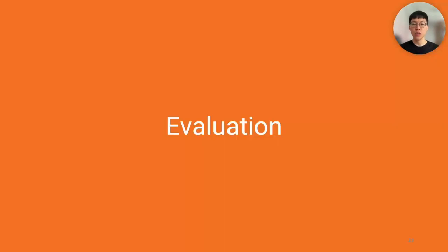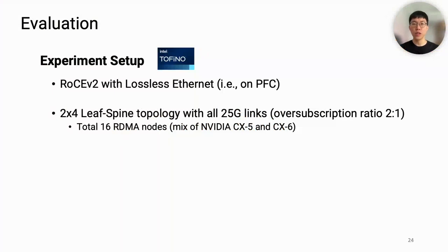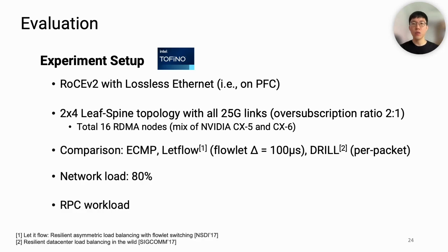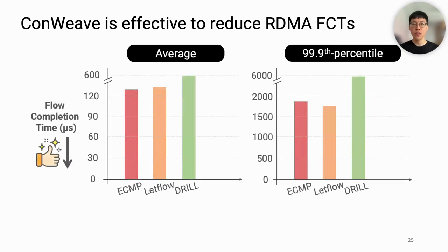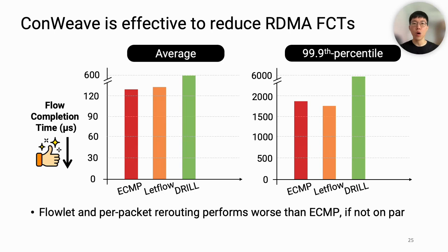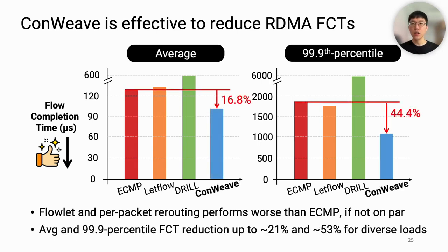Next, we show our evaluation results. We performed evaluation on a RoCEv2 testbed on lossless Ethernet, using a 2-to-4 leaf-spine topology consisting of 16 RDMA nodes with 25G ports. We compare Convive with existing works such as ECMP, LetFlow, and DRILL under 80% network load using an RPC workload. We measured average and 99.9th percentile flow completion times. We find that flowlet and per-packet rerouting performs similarly to or worse than ECMP, which is expected from our previous discussion. Compared to ECMP, Convive reduced average and 99.9th percentile FCT by 16.8% and 44.4% respectively, with similar improvements across different loads.